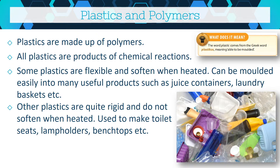Some plastics are flexible — if you heat them they will soften and even melt, which is great if you want to reform and reshape them, making them easy to recycle and remold into something new. Other plastics are quite rigid and don't soften when heated. If you try heating them, they tend to burn, catch fire, and blacken. This is actually handy because we don't always want flexible plastic. Sometimes we want ones that hold up to pressure — like toilet seats, lamp holders, and bench tops, which are made out of a different, more rigid type of plastic.